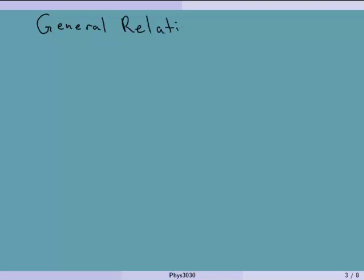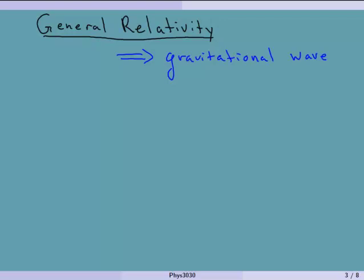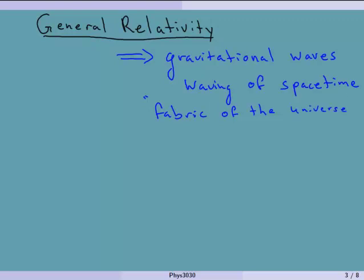Last lecture we talked about general relativity and some of its consequences, such as black holes, the precession of the perihelion of Mercury. One of those consequences was gravitational waves. This was a surprise consequence of the theory of general relativity — gravity meaning the waving of spacetime, the actual fabric of the Universe is what is waving, oscillating back and forth.